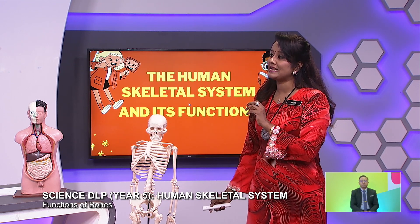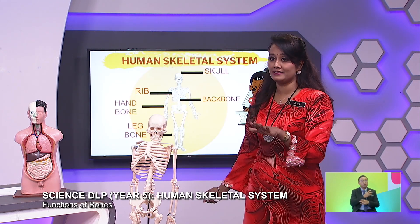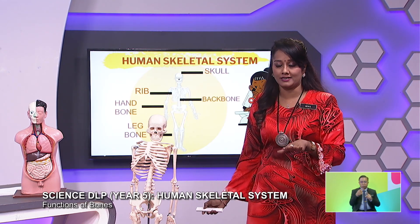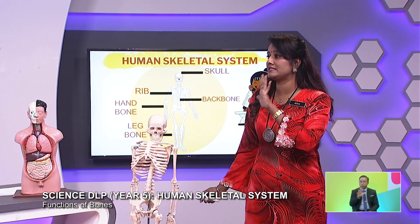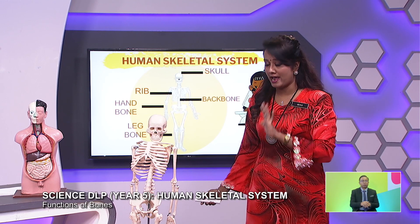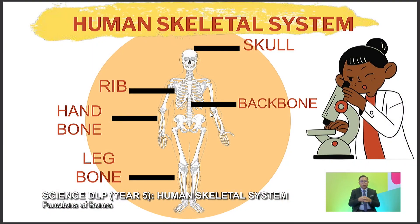So for the human skeletal system, there are five main skeletal parts that we have. There are skull, rib, hand bone, leg bone, and back bone. So this is all about bones in our body, right? Yes. These are the main bones.